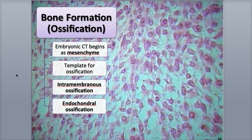Bone first forms during embryological and fetal development out of mesenchyme tissue, which is embryonic connective tissue that is in the rough shape of the bones. The formation of cartilage and the first bone tissue through ossification begins during the sixth week of embryological development.